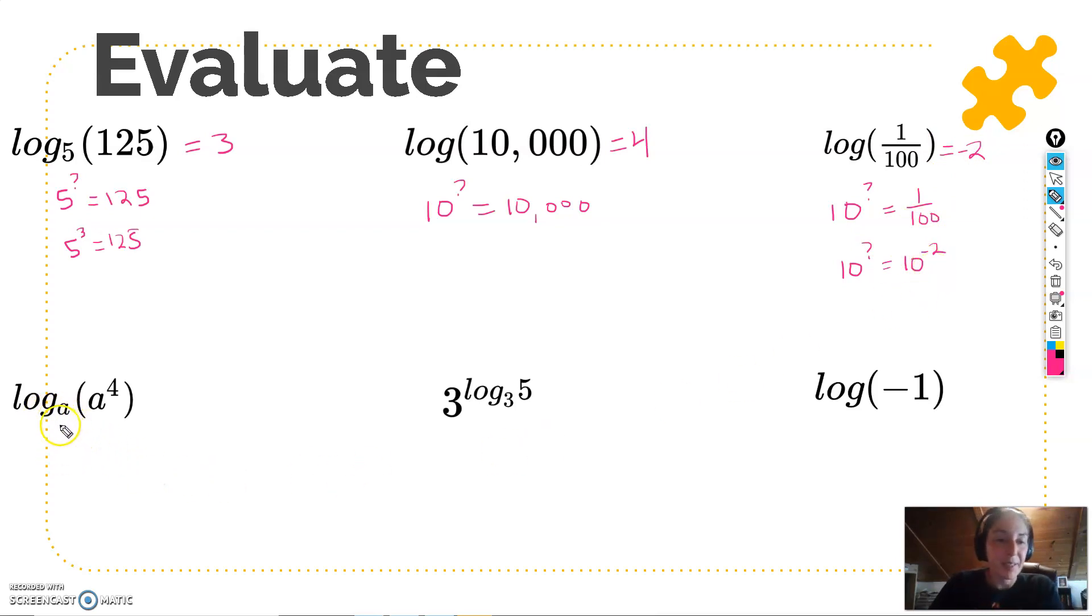What if I have log base a of a to the 4th? So a to what power is equal to a to the 4th? a to the 4th power is equal to a to the 4th. So as you can see here, these two bases will cancel out, and you'll just be left with 4.